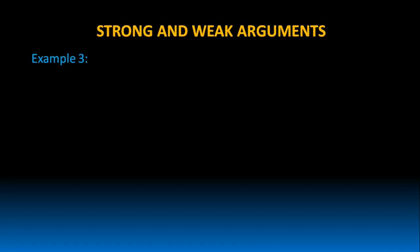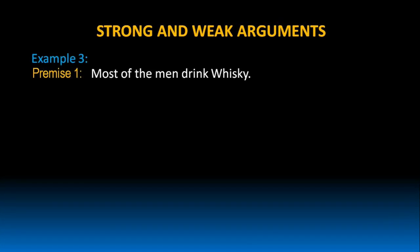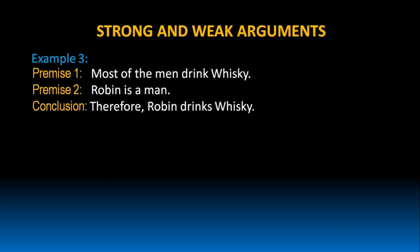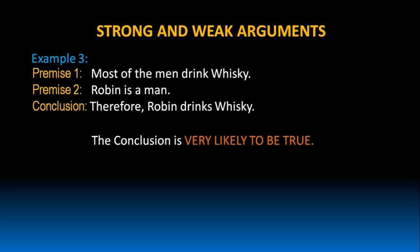Let us look at one more example. Most of the men drink whiskey. Robin is a man. Therefore, Robin drinks whiskey. In this argument, the conclusion is very likely to be true. Why do I say that the conclusion is very likely to be true?